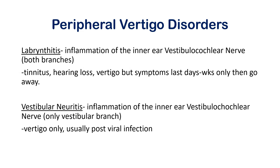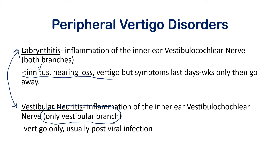Labyrinthitis is inflammation of the inner ear vestibulocochlear nerve affecting both branches — the vestibular and the cochlear. Vestibular neuritis, on the other hand, is inflammation of only the vestibular branch. Because labyrinthitis hits both branches, you'll have tinnitus and hearing loss from the cochlear branch, plus vertigo from the vestibular branch — all the same symptoms as Ménière's disease.